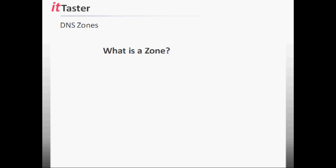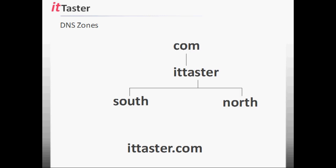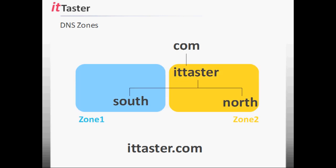The next important DNS component I'm going to cover is zones. Zones enable us to divide our domain namespace into manageable portions. In this example, the ittaster.com domain has north and south subdomains representing two geographical locations — imagine 2,000 hosts at the north site and 5,000 at the south. DNS enables us to divide our namespace into zones: one zone for the north portion and another for the south. One administrator can manage the ITTaster and north domains, while another manages the south domain, distributing the task of DNS administration.